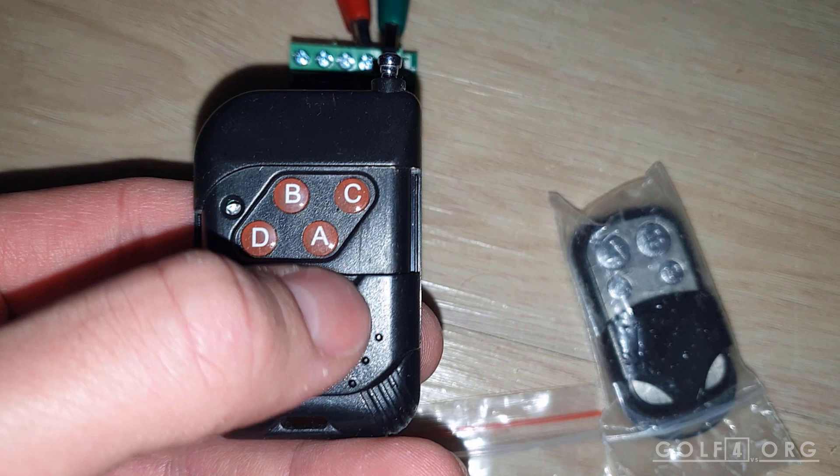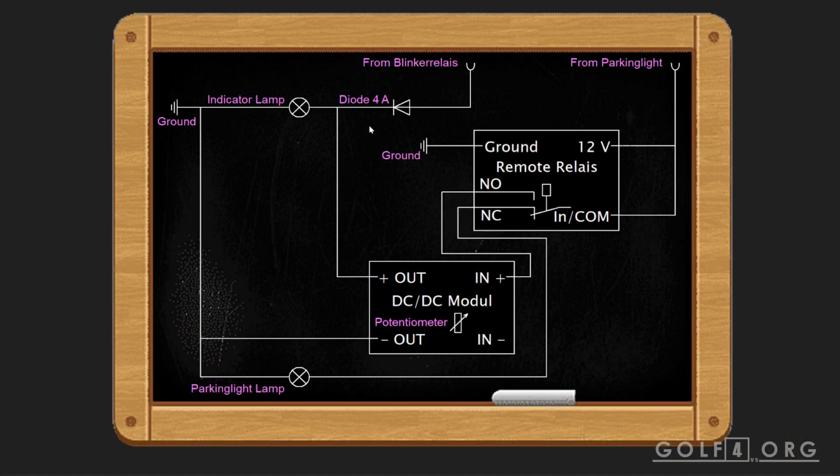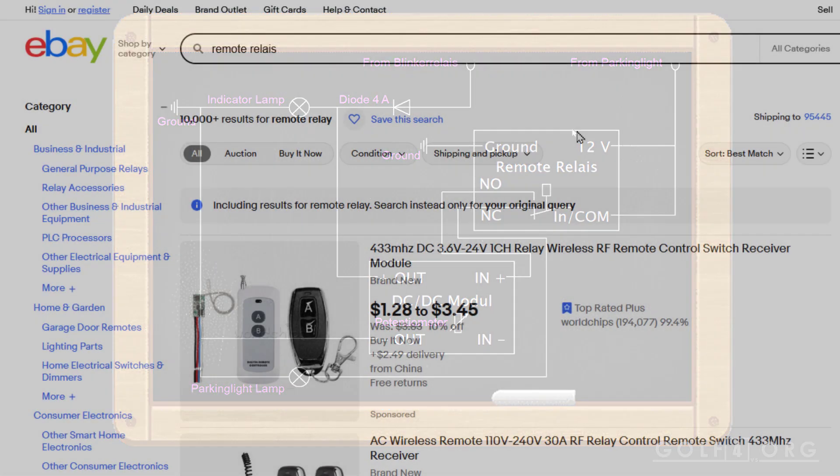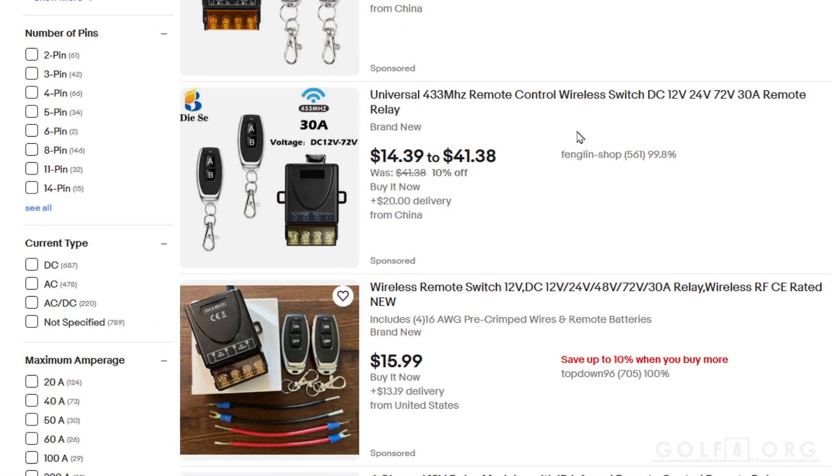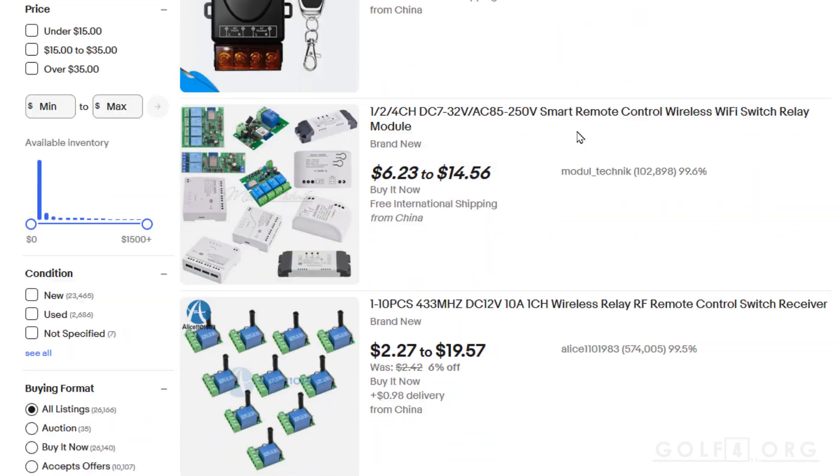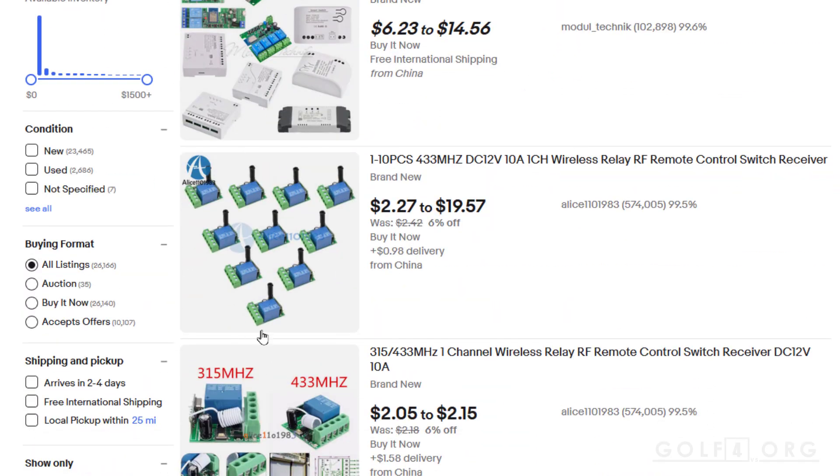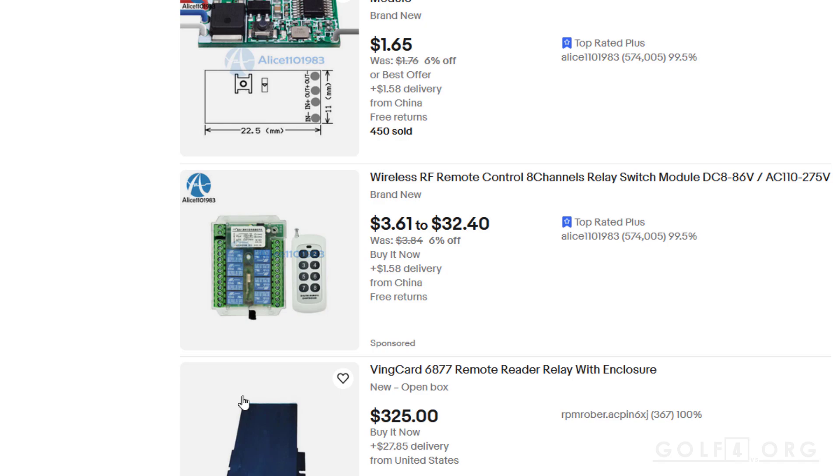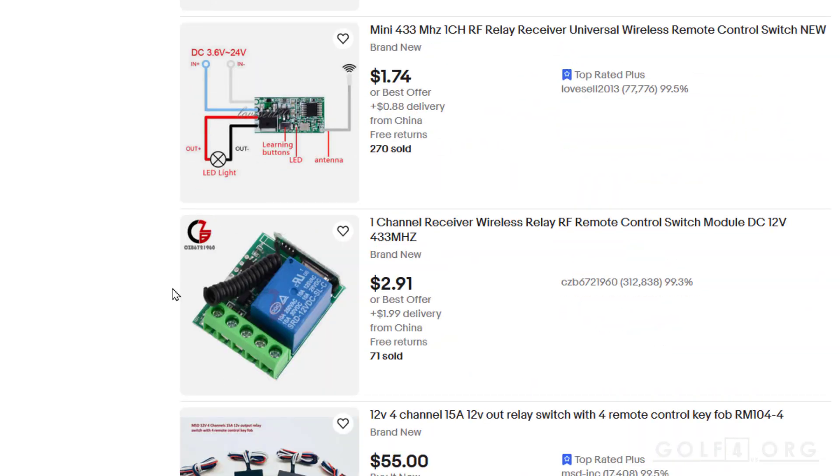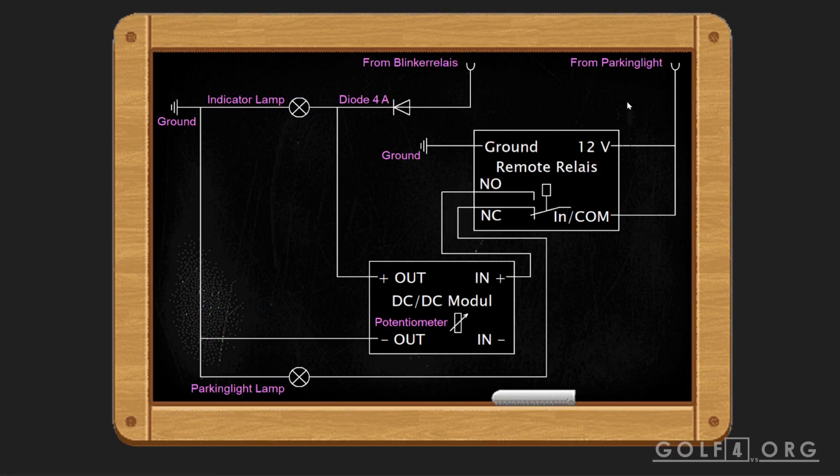Now let's go on with the more complex version with the remote control. For the remote control version, you also need this diode for each headlight, you need this DC-DC module for each headlight, and you need this remote relay for each headlight. I will show you a picture how this remote relay could look. In this case, we get our power from the parking light and not from an extra 12-volt line.